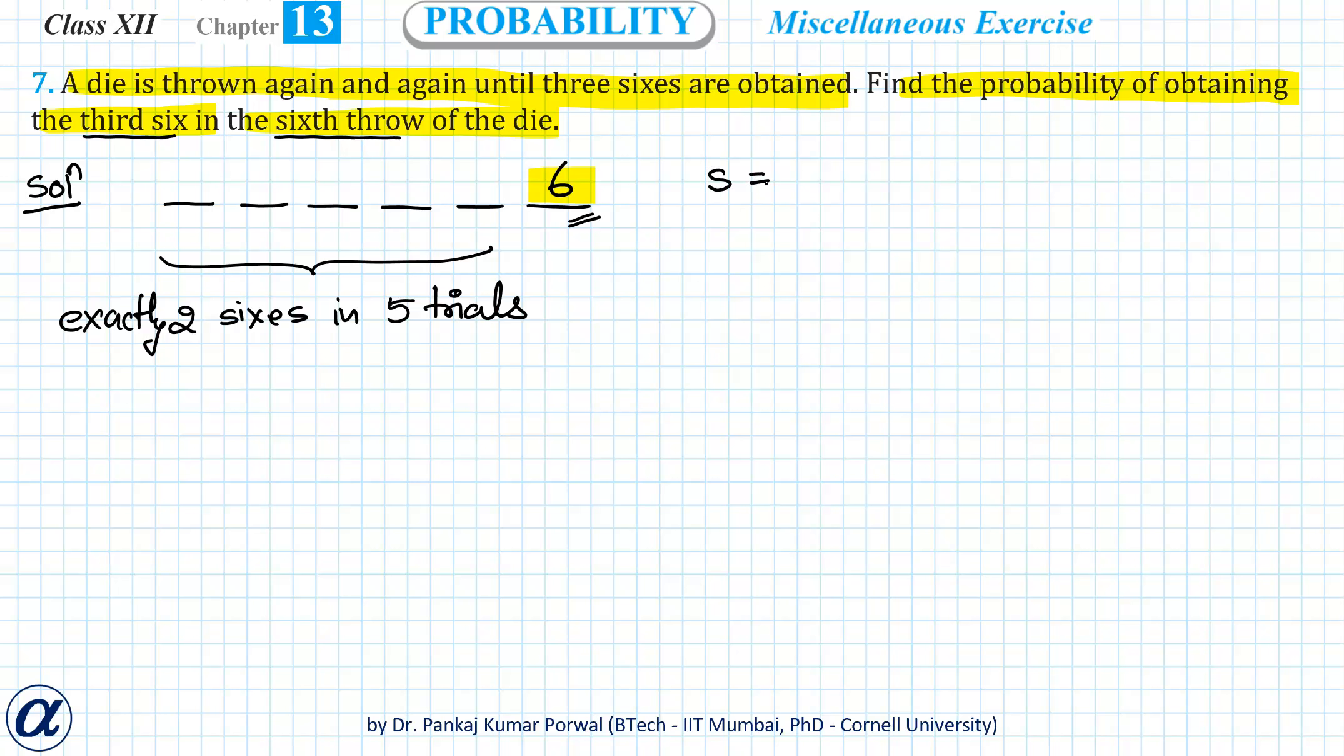Now let's define s as the event of getting six in a throw of the die, and then s̄ will be the event that we get some number other than six in the trial.